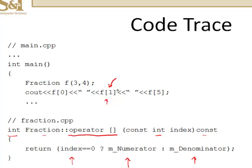That's what goes in for index here. That's not 0, therefore this should return the denominator. And f of 5, that should return the denominator also.